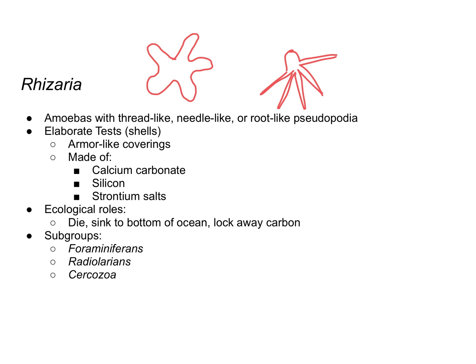One interesting ecological role of Rhizaria is that they help to lock away carbon. There is carbon in these shells, as well as in the living cell itself. When these protists die and sink to the bottom of the ocean, they actually lock away carbon — really locking away atmospheric carbon — and that carbon gets delivered to the bottom of the ocean.